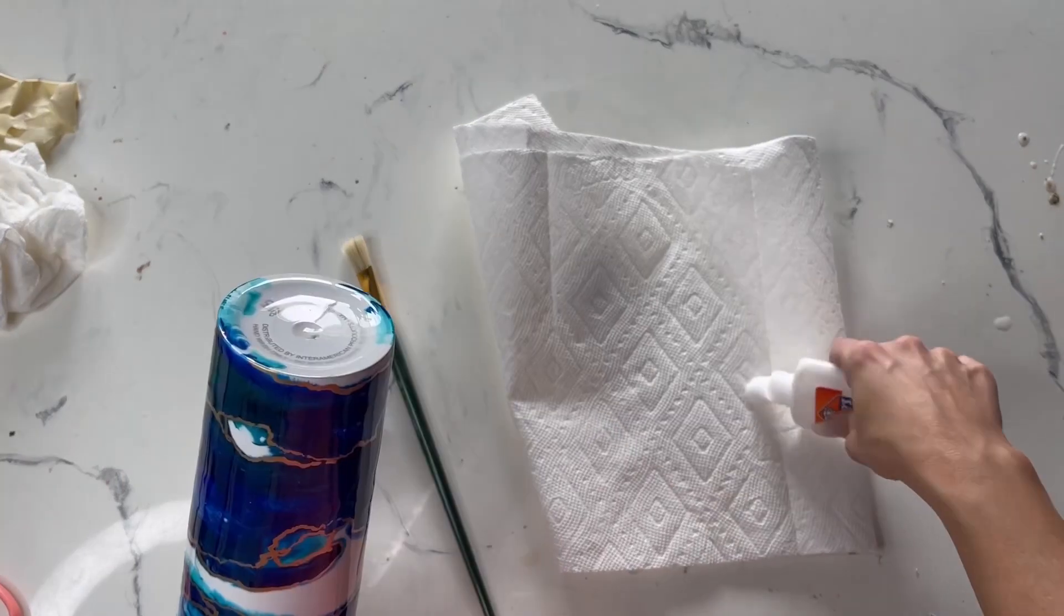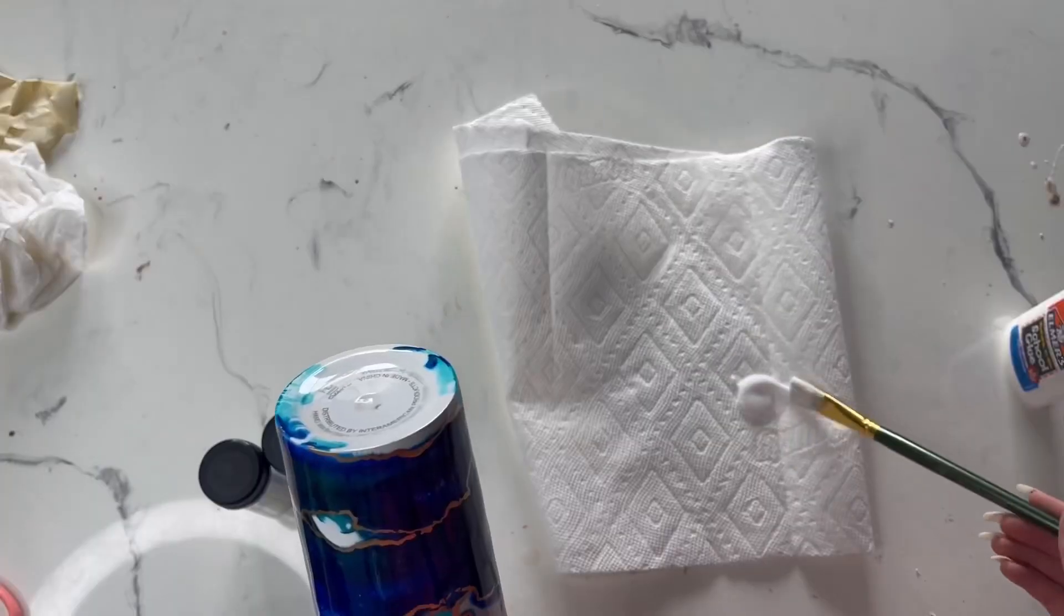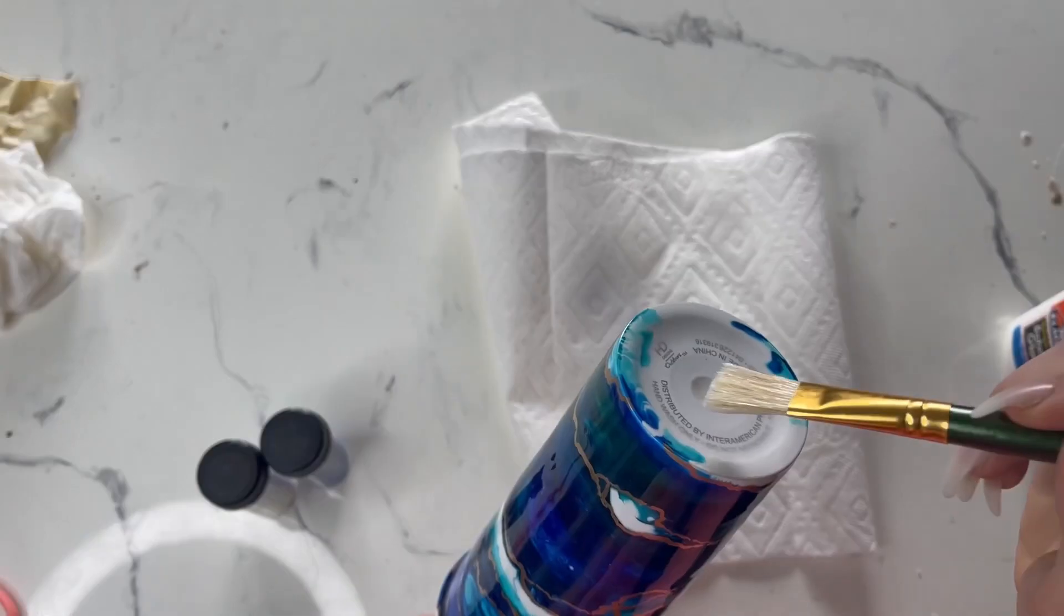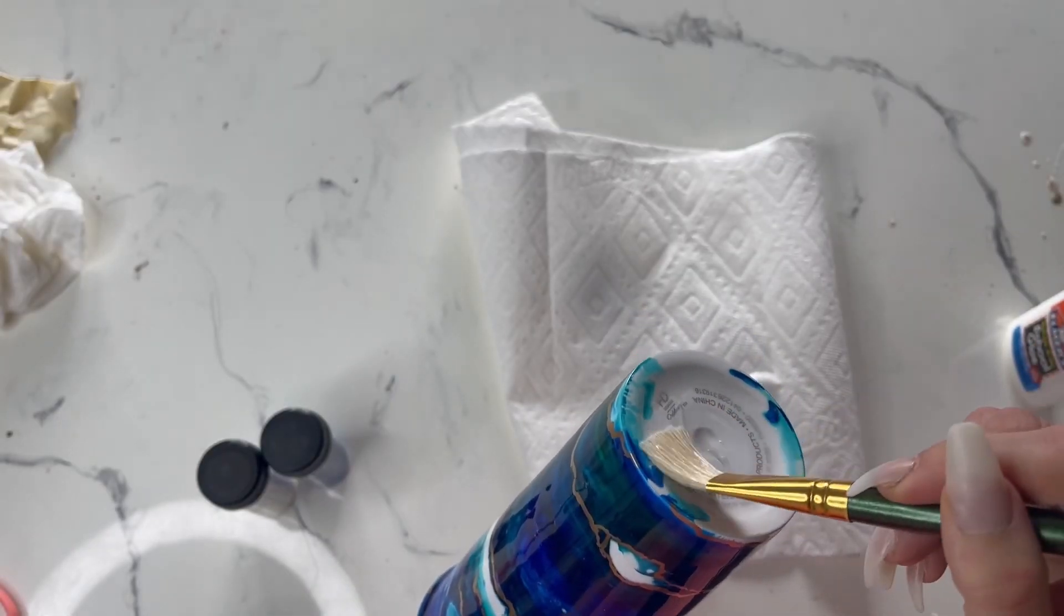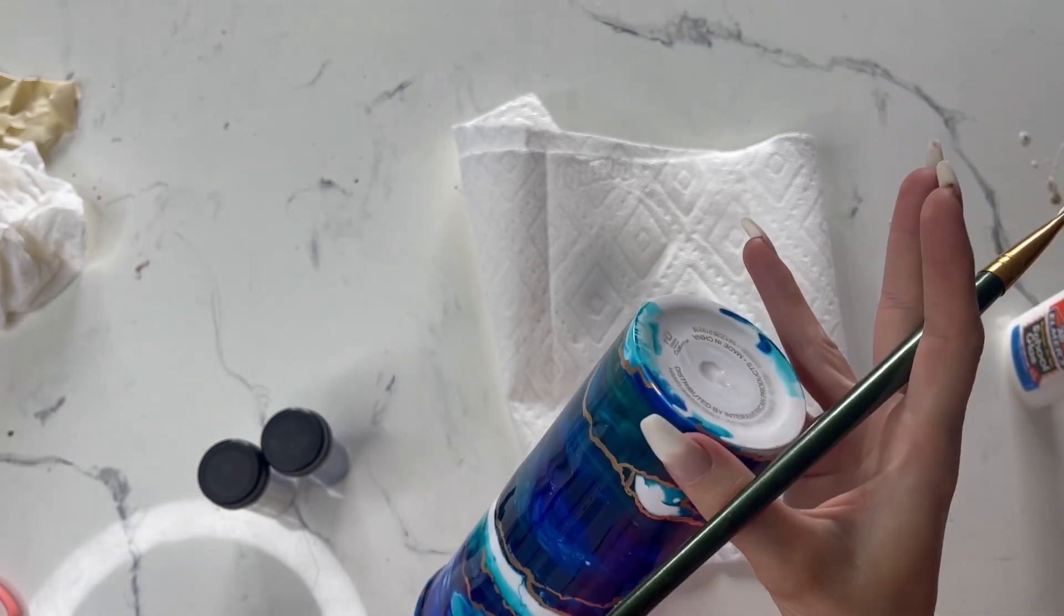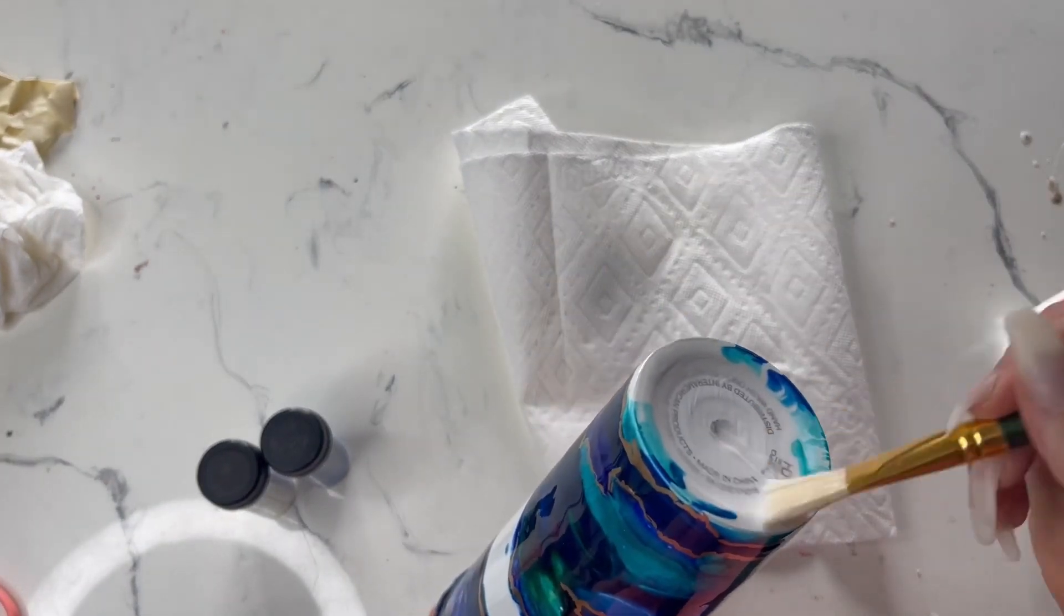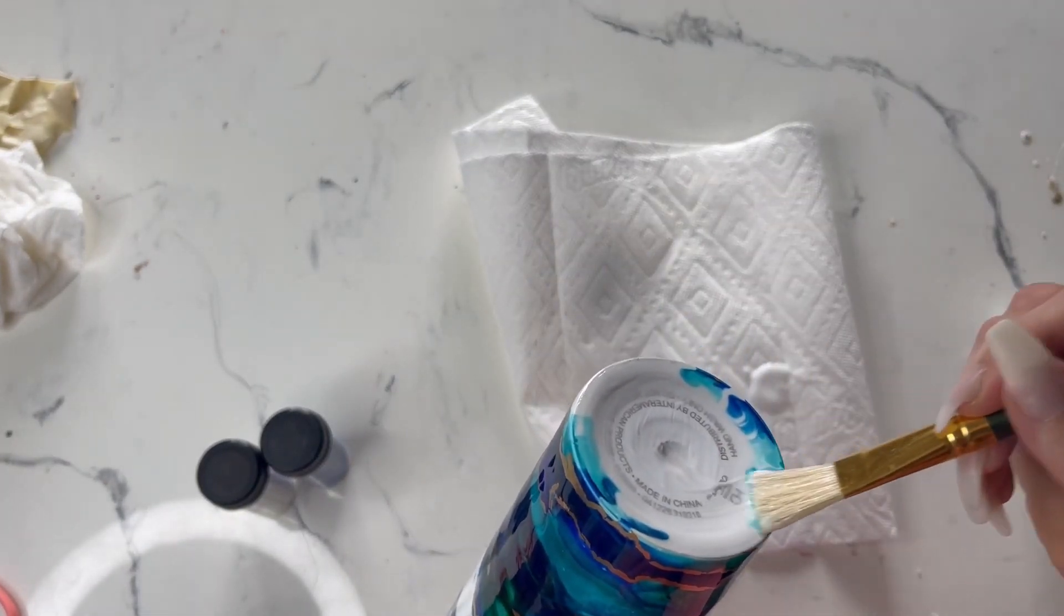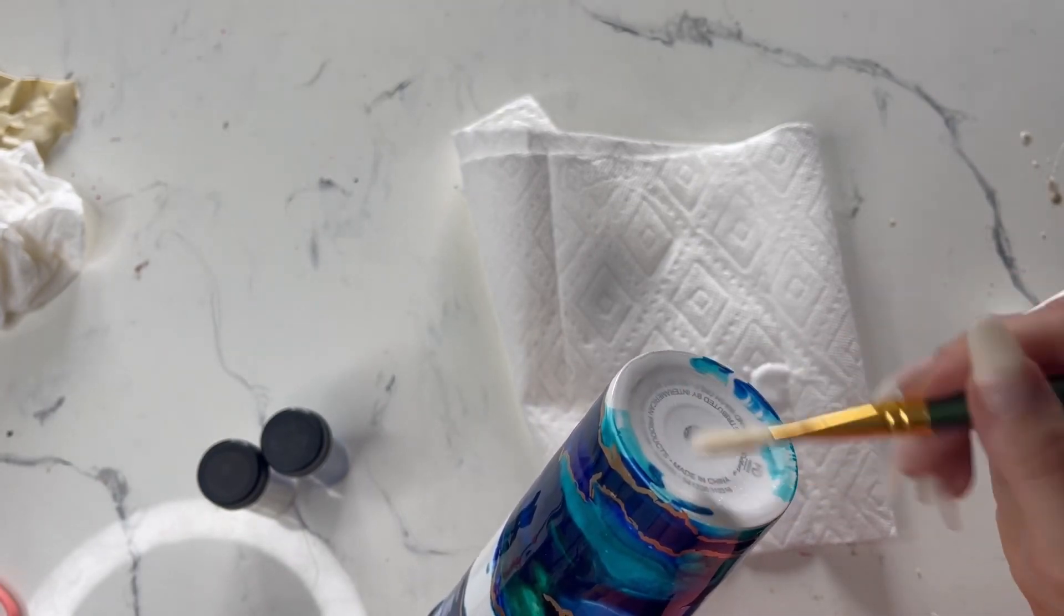So then I realized I didn't put any alcohol ink on the bottom and it looked kind of dumb. So using some Elmer's glue, because I couldn't find Mod Podge, and come to find out Mod Podge is basically just Elmer's glue with water in it, so just using the Elmer's glue, coating the bottom.